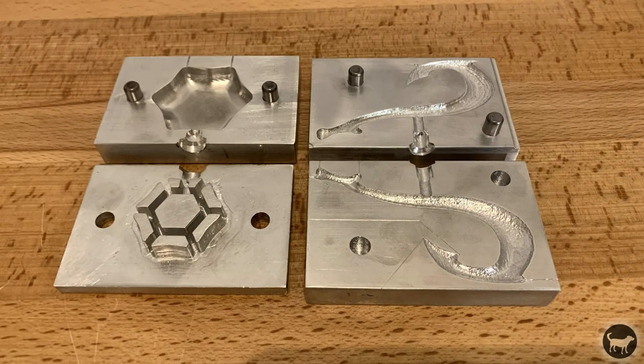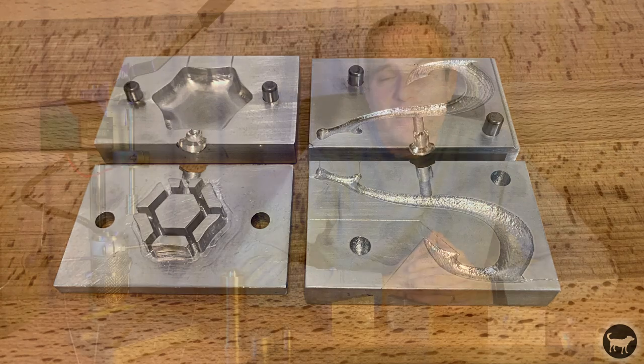The other side of the mold will have holes slightly larger than the diameter of these pins. That way the two can come together the same and line up how I want them to.